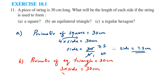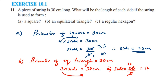Transposing 3 to the other side: side = 30 ÷ 3. Since 3 × 10 = 30, therefore side = 10 cm. This is the side of the equilateral triangle.